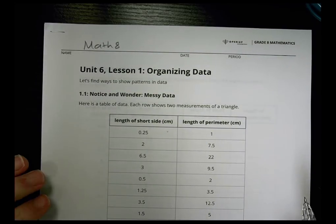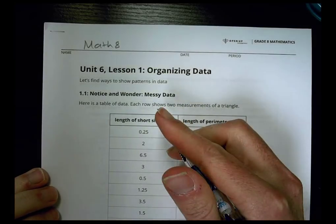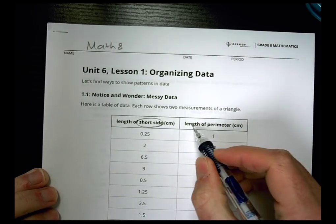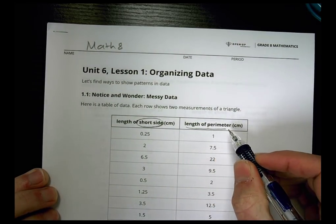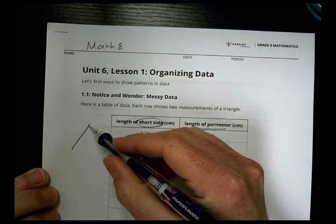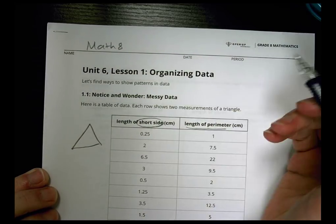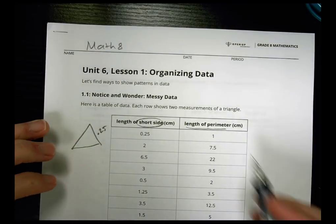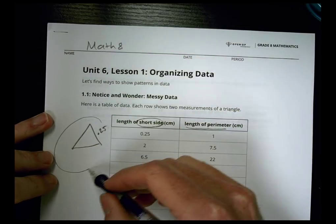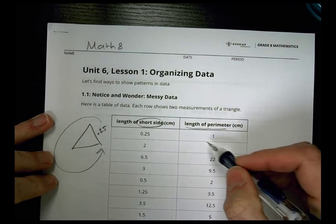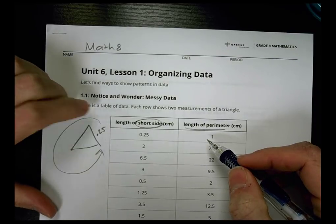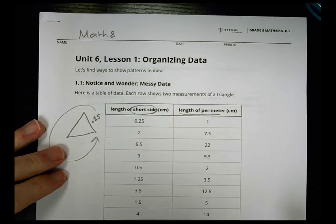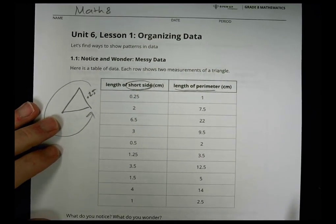It says here's a table of data. Each row shows two measurements of a triangle. We have the short side of the triangle listed in this column, and here we have the length of the perimeter. We have a triangle with a short side given to us as 0.25. The length of the perimeter, which is the distance around the whole thing, shows the combination when you add up all three sides to be one. What are some things that you notice or wonder about when you look at this table?